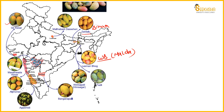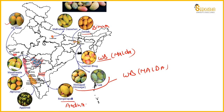West Bengal, Malda has two GI-tagged varieties: Khirsapati and Fuzzy - both are West Bengal Malda GI tag. Then we come to the next variety called Banganapalli, which is an Andhra Pradesh variety from the Kurnool region.